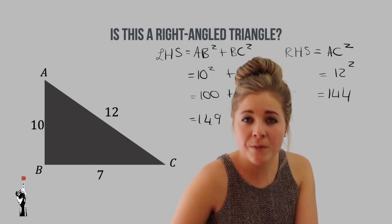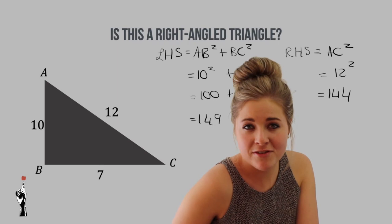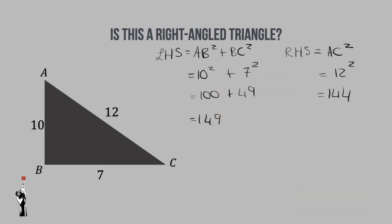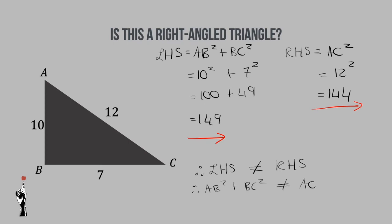In lesson 3 you are going to learn how to classify triangles and see which type of triangle this really is. For now, you can see that the left hand side is not equal to the right hand side. Therefore, AB squared plus BC squared is not equal to AC squared, and therefore triangle ABC is not a right angled triangle.